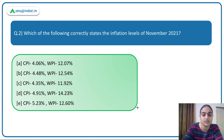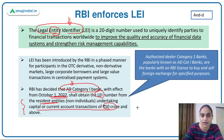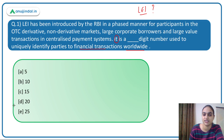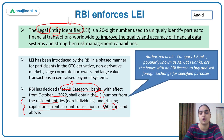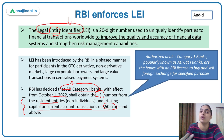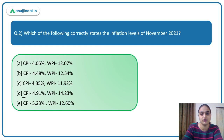Coming back to our first question — the blank is a 20-digit number, which is allotted to entities. The overall objective of LEI is to enhance the quality of financial systems and risk management capabilities, making them more efficient. Now moving on to the second question.